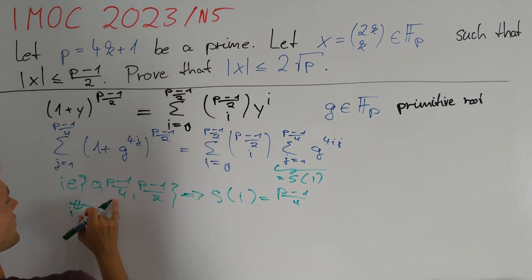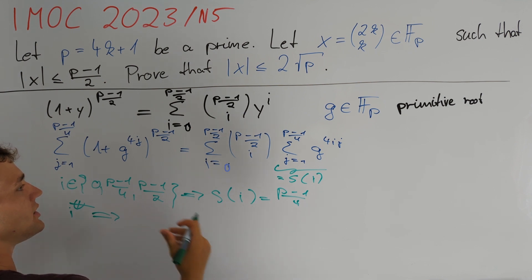Otherwise (p-1)/4 will not divide i and since g is a primitive root we can conclude that g^(4i) will not be equal to 1 in Fp. Therefore we can use the formula for geometric series to obtain that s(i) is equal to g^(4i) times (1 - g^(i(p-1))) divided by (1 - g^(4i)).